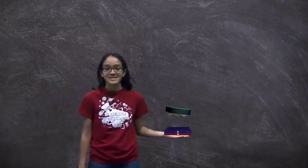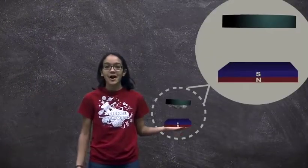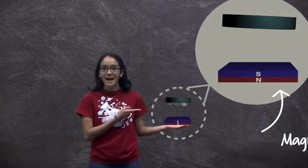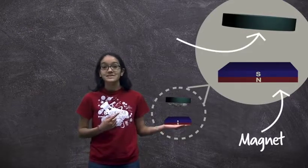So what is quantum levitation? Simply put, it's making an object hover in midair using only a magnet. We call this object a superconductor.